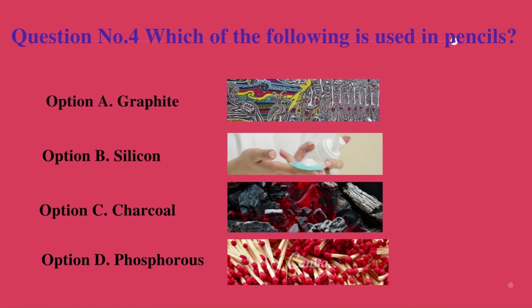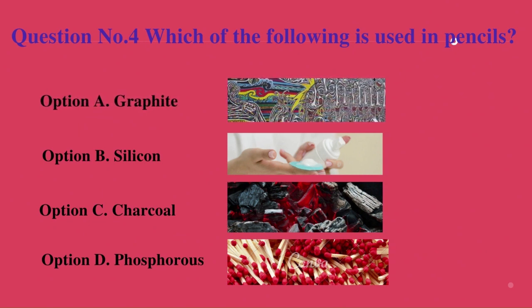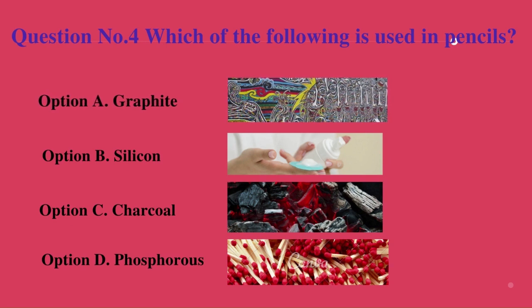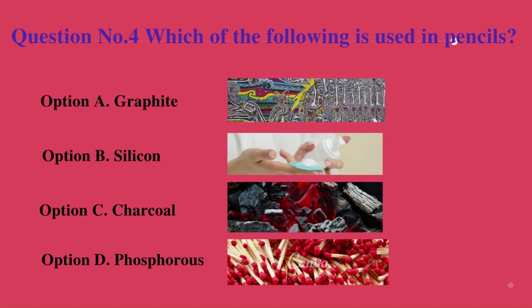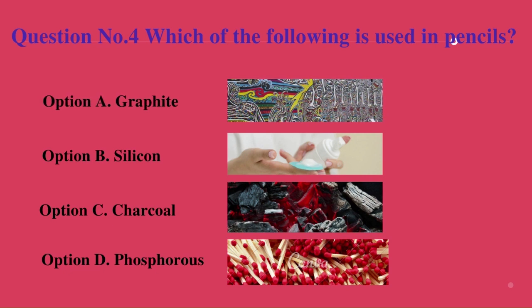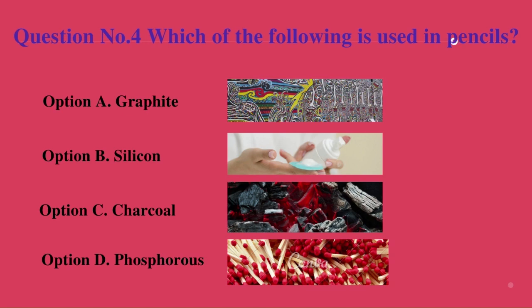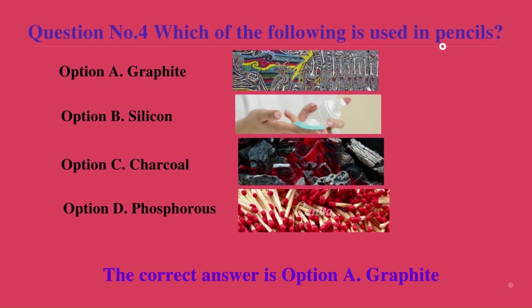Question number 4. Which of the following is used in pencils? A. Graphite. B. Silicone. C. Charcoal. D. Phosphorus. The correct answer is A. Graphite.